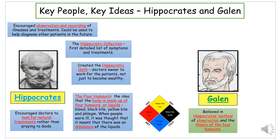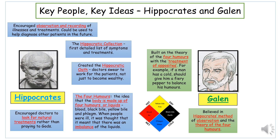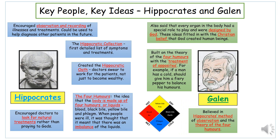Galen had read Hippocrates and was a big believer in the four humours — this influenced all of his work. The key idea that Galen came up with was the treatment of opposites, linked to the four humours. When you're unwell there's a problem in one of those liquids, and Galen said you need to identify the problem and treat it with the opposite: if someone is too hot, treat it with something cold; if too cold, treat with something hot. For example, if someone has a cold, make them eat a fiery pepper to restore the balance in their humours.